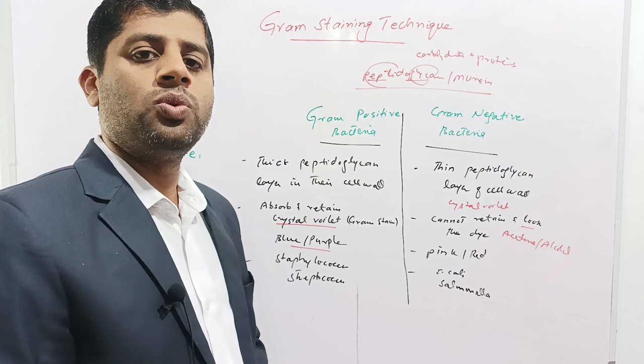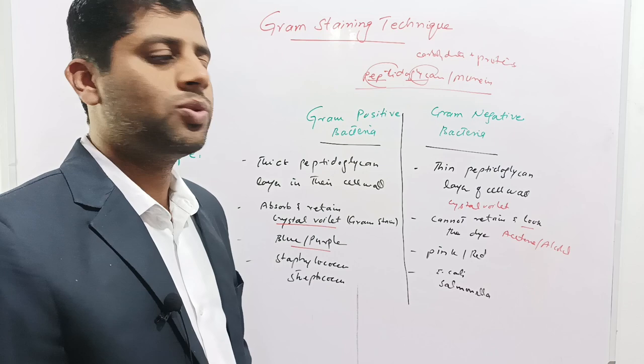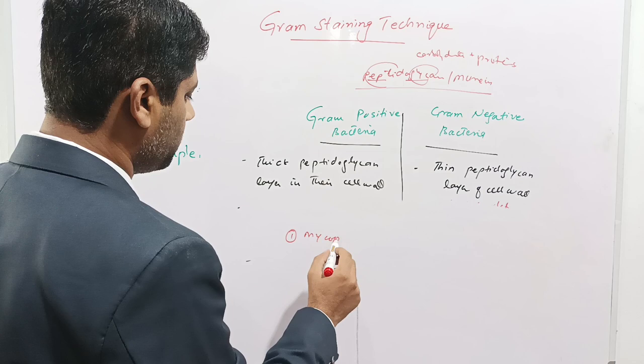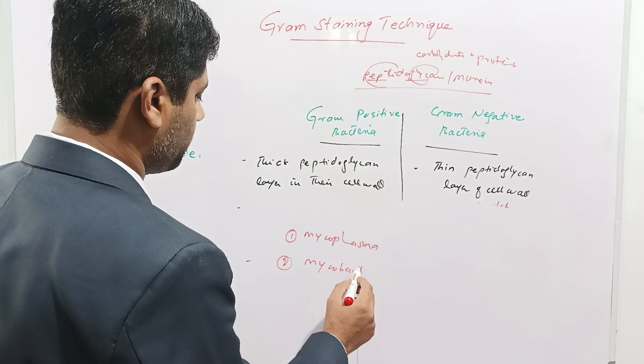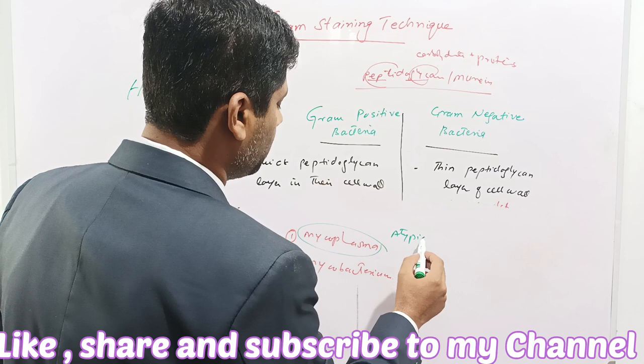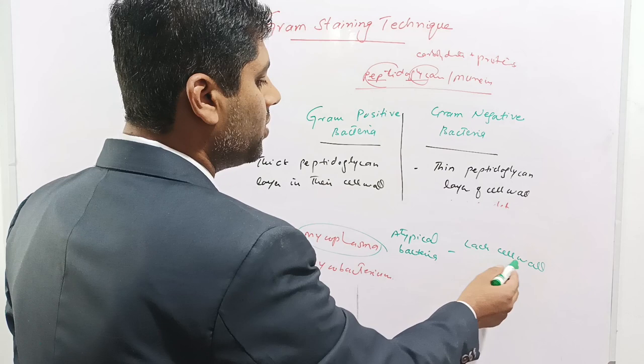These are the two major groups of bacteria. However, there are certain exceptional cases — bacteria which cannot be classified under the Gram positive or Gram negative groups. These are Mycoplasma and Mycobacterium. Mycoplasma is also called atypical bacteria because it lacks a cell wall. Due to the lack of a cell wall, it cannot absorb or retain the Gram stain and is not classified under Gram positive or Gram negative bacteria.